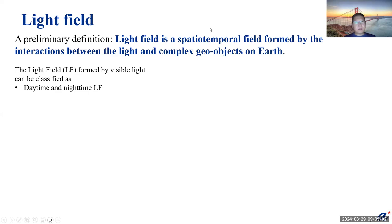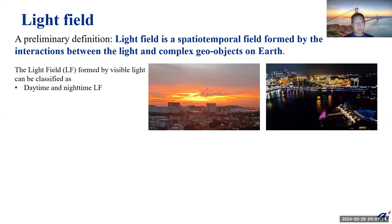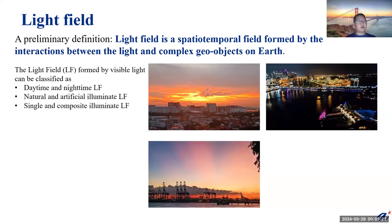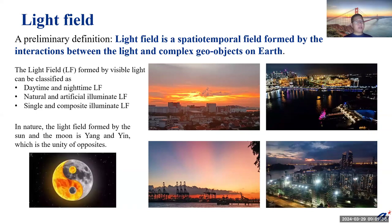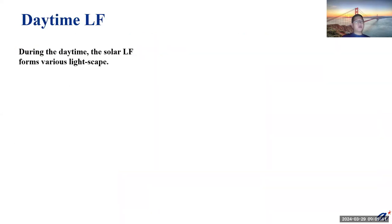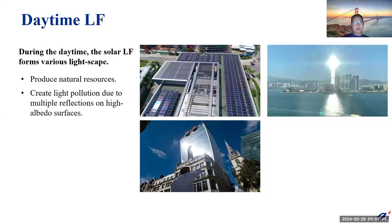The light field formed by visible light can be classified as daytime and nighttime light fields, natural illumination and artificial illumination light fields, and single illuminate and composite illuminate light fields. In nature, the light field formed by the sun and the moon is yang and yin, which is also the unity of opposites. During the daytime, the solar light field forms various light and sky conditions, which can produce natural resources but can also create light pollution due to multiple reflections on high albedo surfaces.